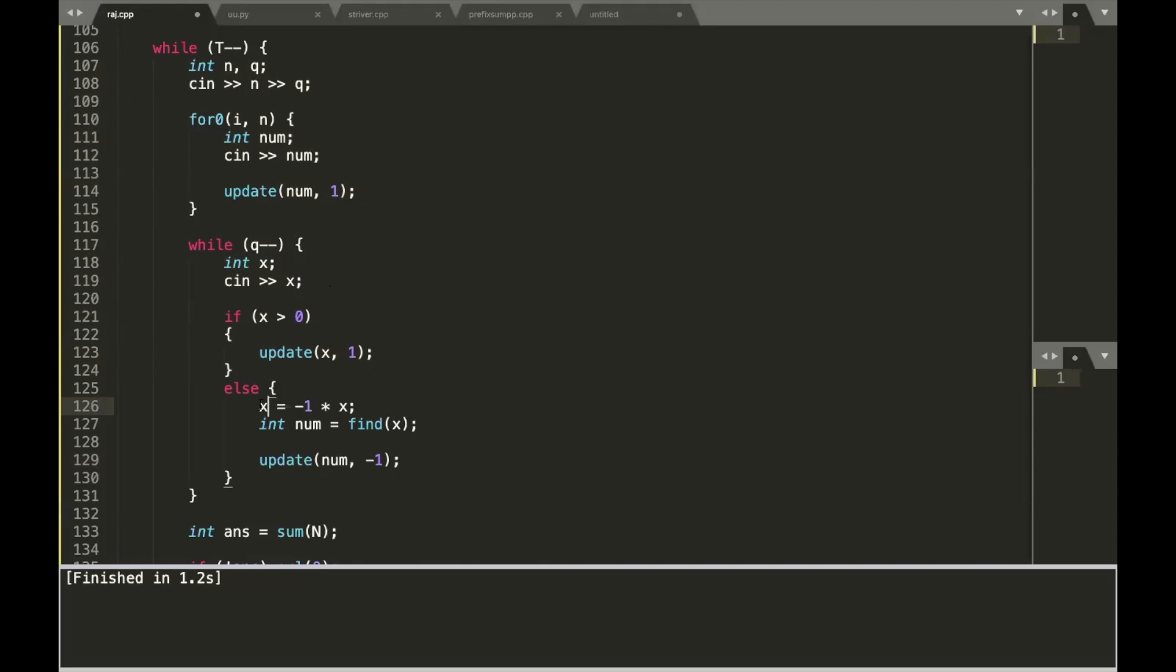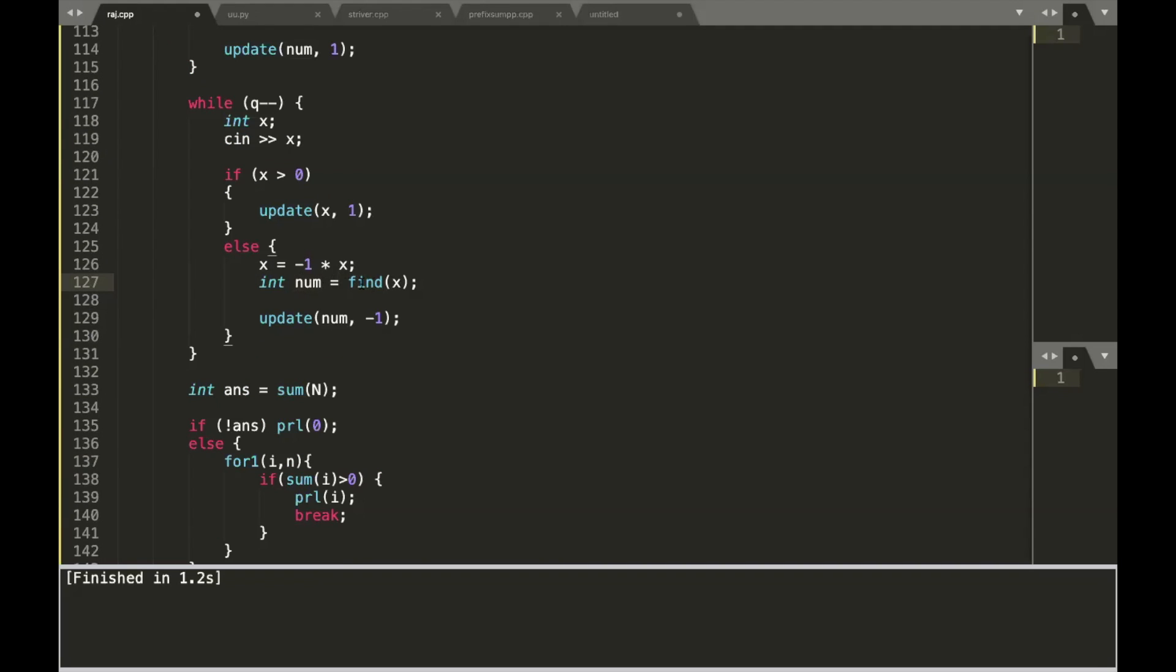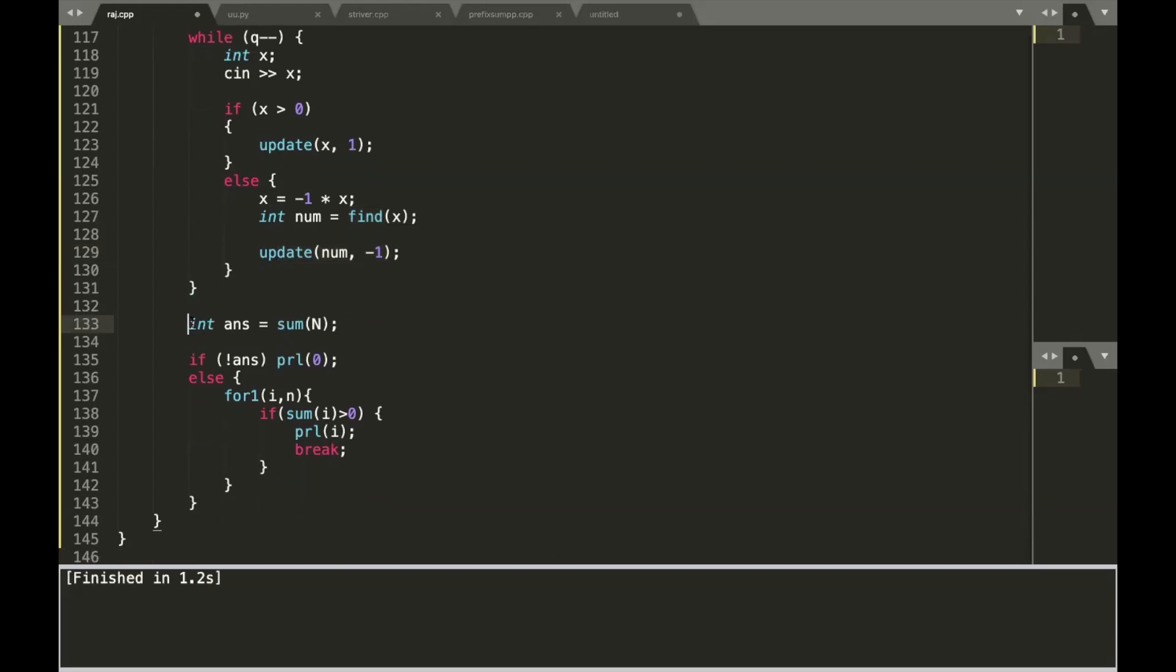If it was a negative number, then we multiplied it with minus 1 because you have to take its absolute value. Then we use binary lifting to find out the xth element, so that is num. Then we updated the num by minus 1 because we are deleting the element. Once you have done that, all the other things stay the same.